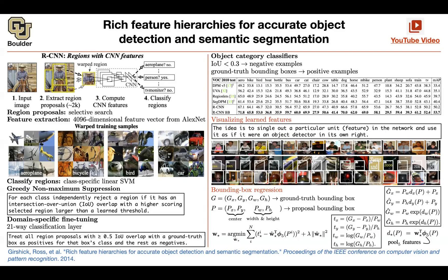The warping is just a reshape of whatever is inside the box. The reason you do the warping is because at that time this neural network is actually AlexNet, and the input to that neural network had to be 224 by 224. So it's going to be a reshaping and at the same time some interpolation going on.